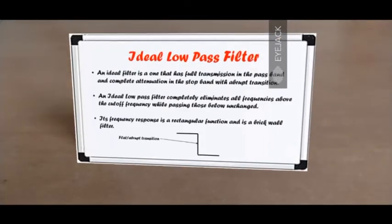Let's look at the types of low-pass filters. There are two types: one is ideal and the other is real. An ideal filter is the one that has full transmission in the pass band and complete attenuation in the stop band with abrupt transition.